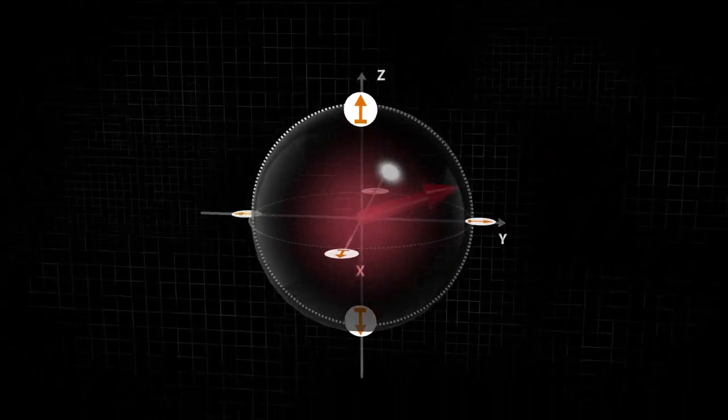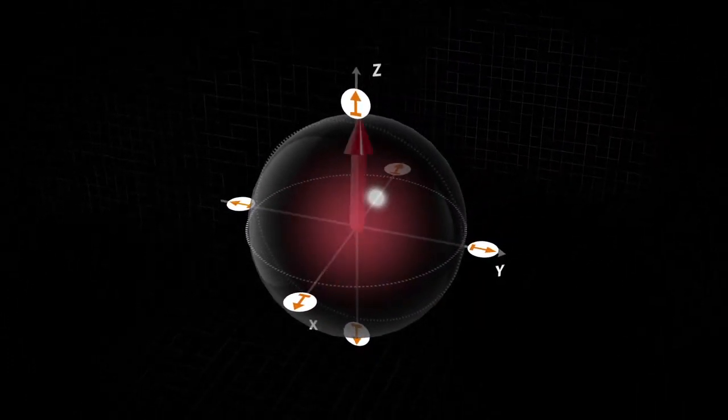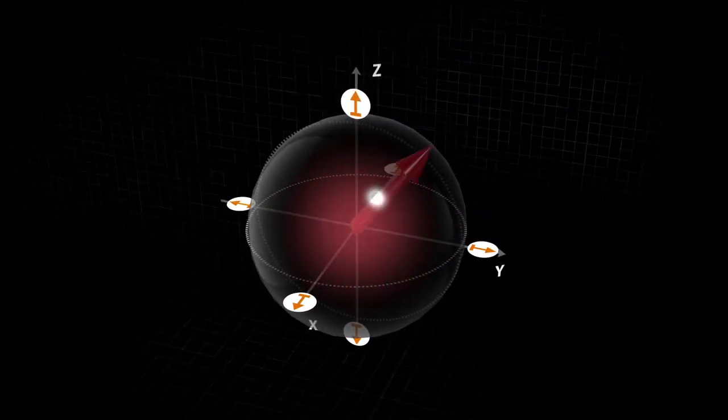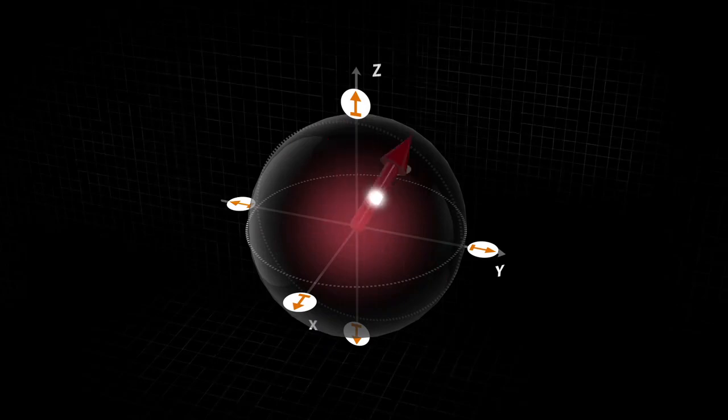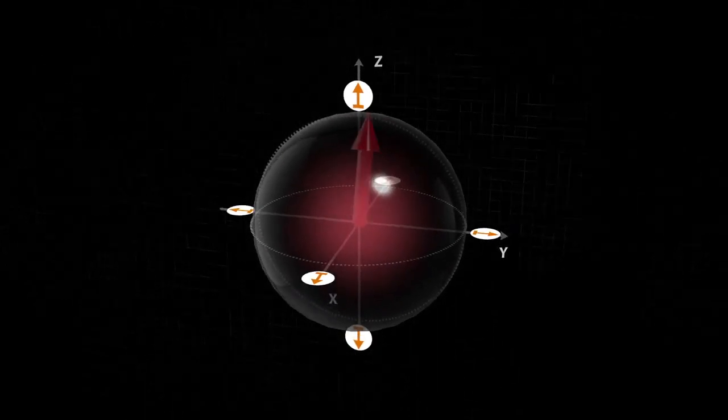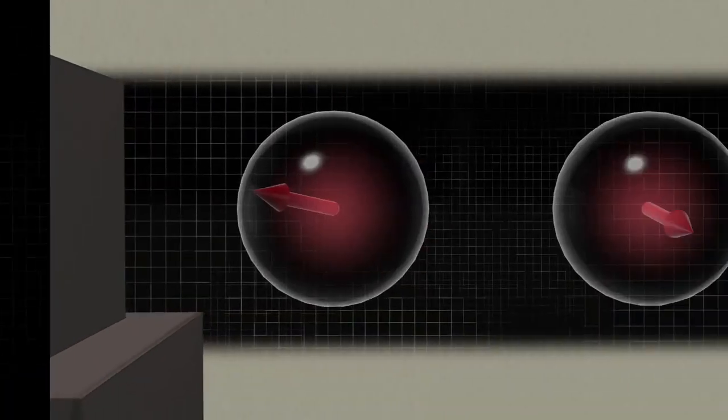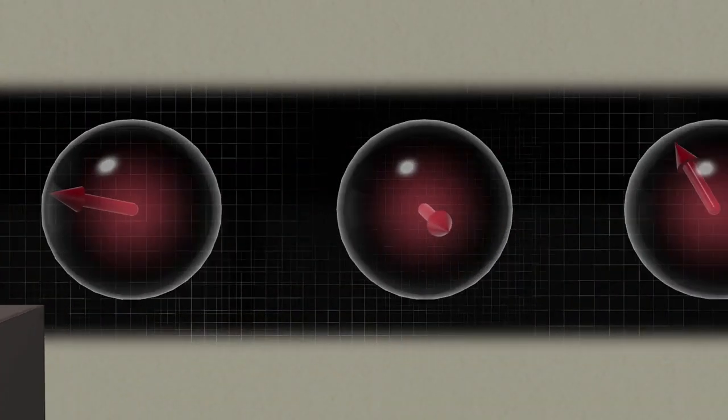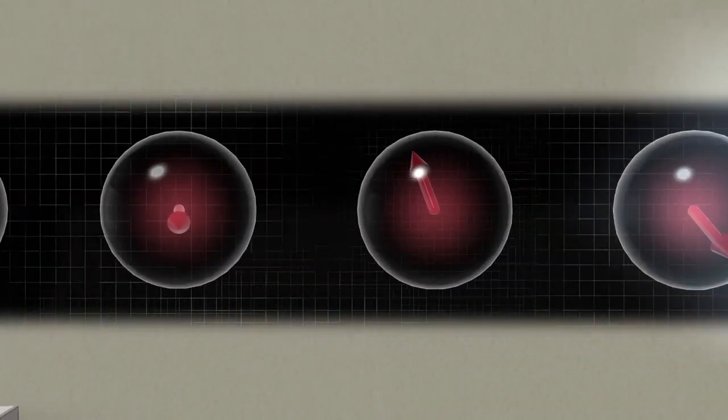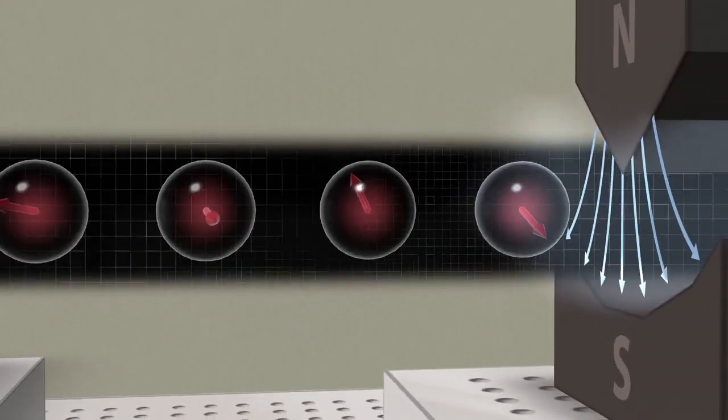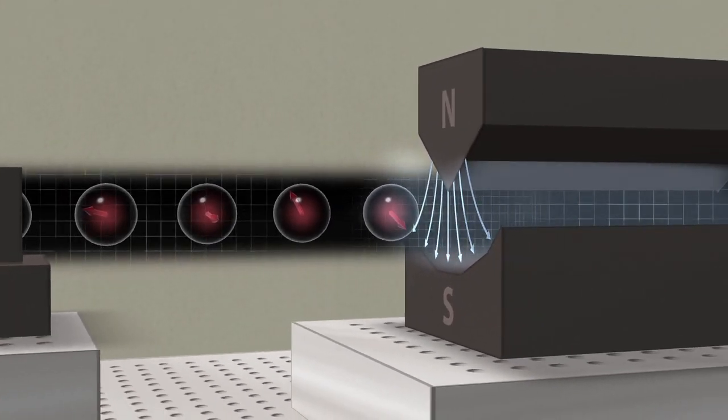We can represent this spin state using a Bloch sphere. The spin can point in any random direction. The spins of all silver atoms are randomly distributed. They are, therefore, not polarized.